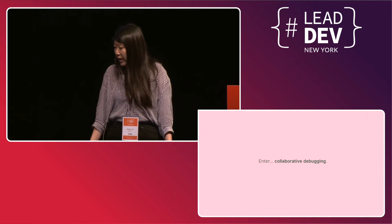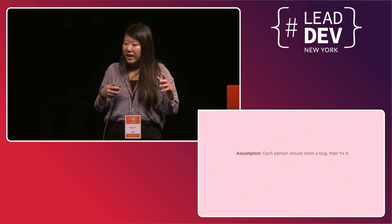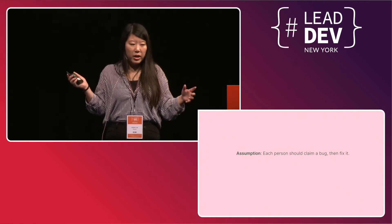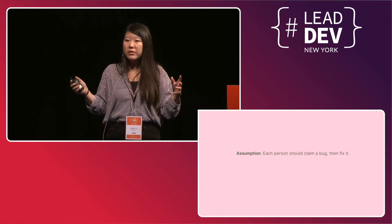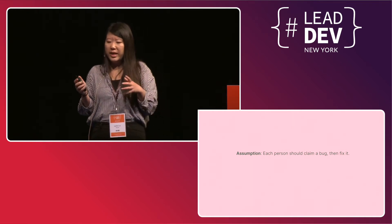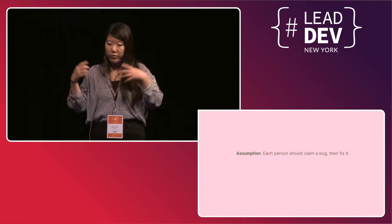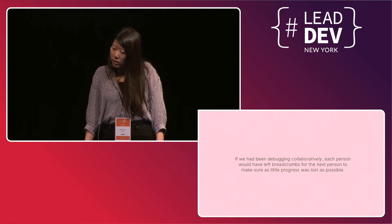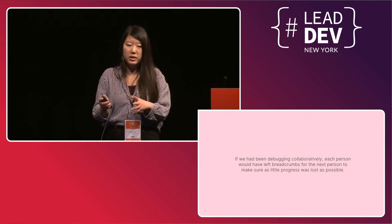So enter collaborative debugging. Everyone was operating under the assumption that each person should claim a bug and fix it in one stretch. But that's a faulty assumption — the hardest bugs require longer investigations and more people with different knowledge of the codebase looking at the problem. Besides that, it can be really frustrating to work on a bug nonstop for days without visible progress. Splitting the work allows people to tag on and tag off, work on different projects, and refresh themselves. If we had been debugging collaboratively, each person would have been leaving behind breadcrumbs for the next person to make sure as little progress was lost as possible.